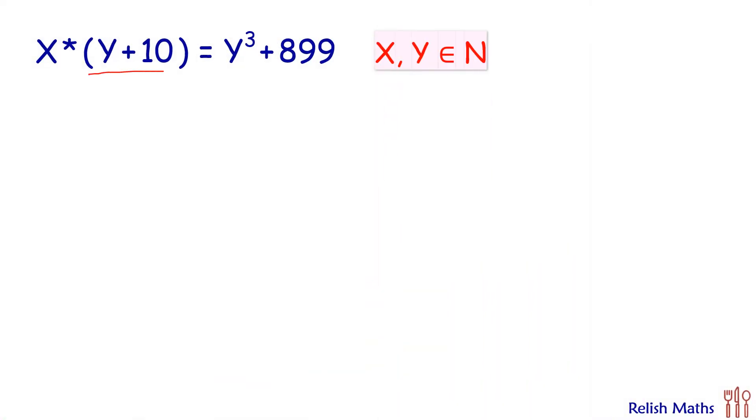Let's start with Y plus 10. It's getting multiplied in LHS so it will divide RHS. In the denominator we have A plus B, in the numerator we have A cube. I need 10 cube so I need thousand. For that we will add 101 and subtract 101 so it becomes 1000. We'll have X equals Y cube plus 10 cube minus 101 upon Y plus 10.